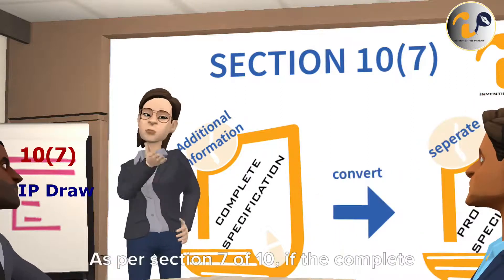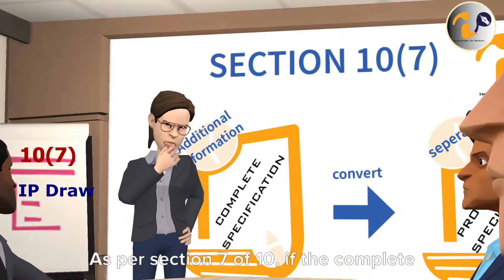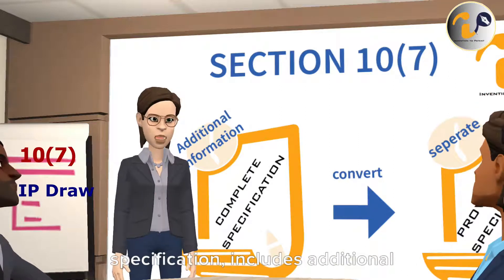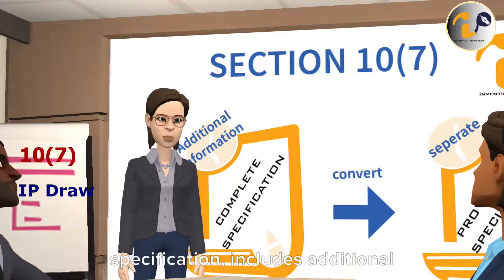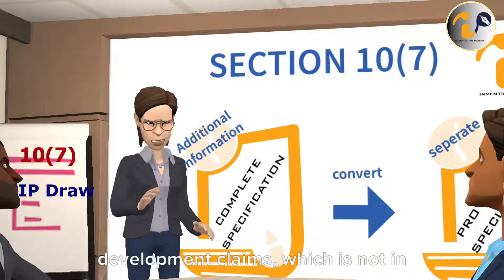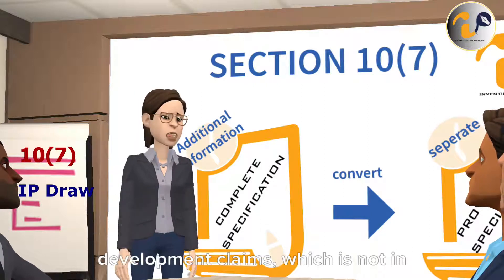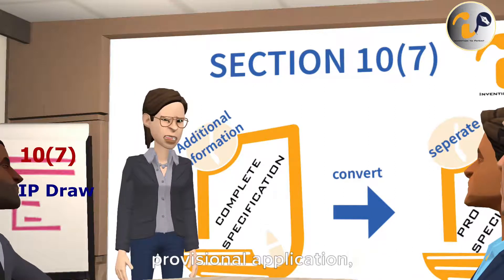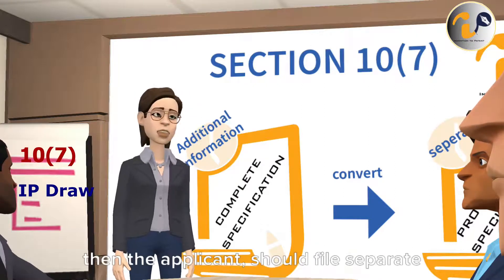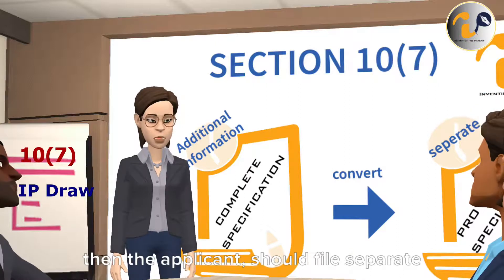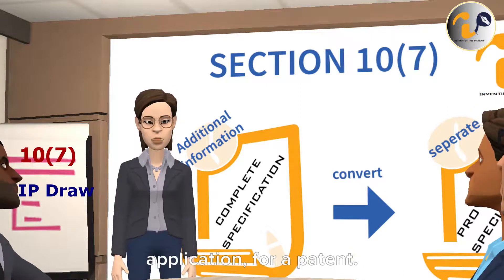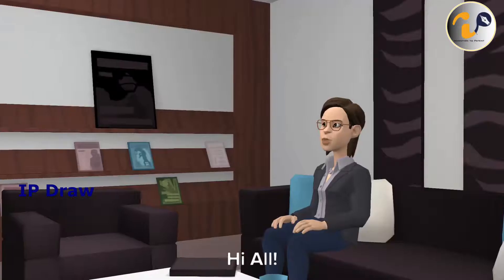As per Section 10(7), if the complete specification includes additional or development claims which are not in the provisional application, then the applicant should file a separate application for a patent.